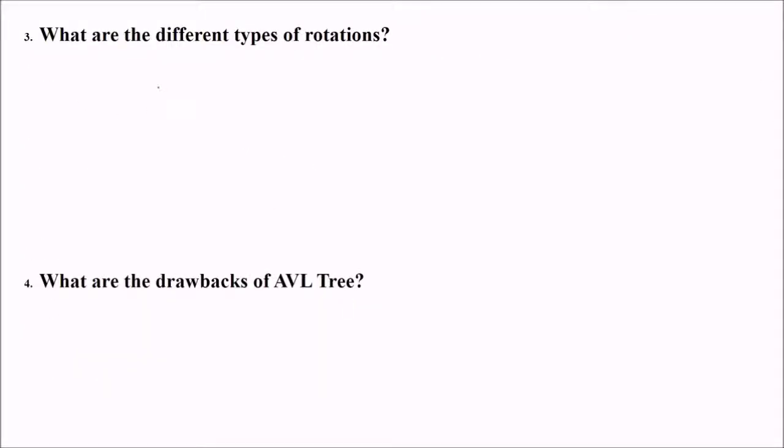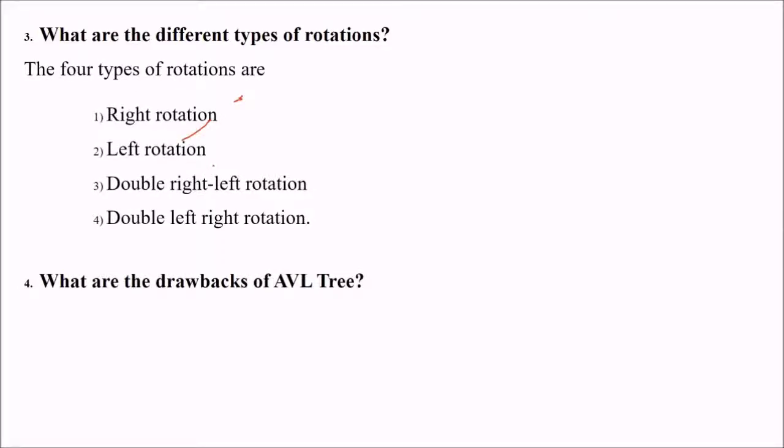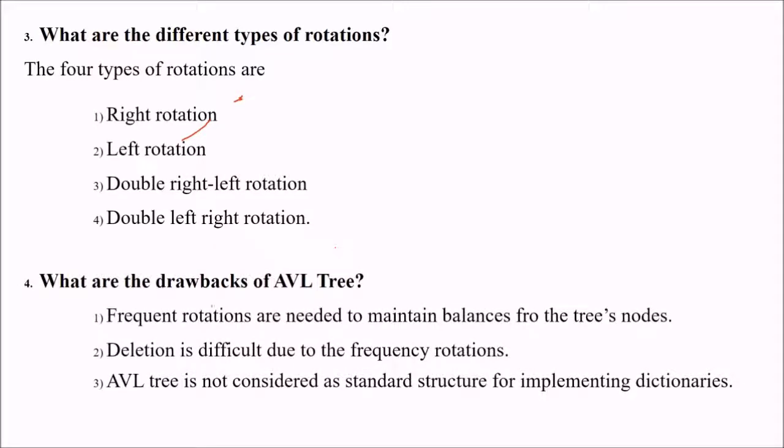What are the different types of rotations? We have right rotation, left rotation, double right-left rotation and double left-right rotation. These are all the possibilities of rotations in AVL tree. Drawbacks of AVL tree: frequent rotations are needed to maintain balance for the tree nodes, increasing time. Deletion is difficult due to this frequency of rotations. AVL tree is not considered as a standard structure for implementing dictionaries because of these drawbacks.